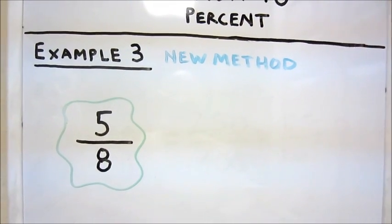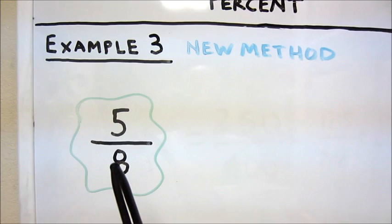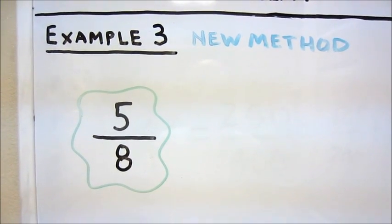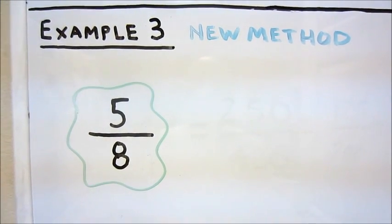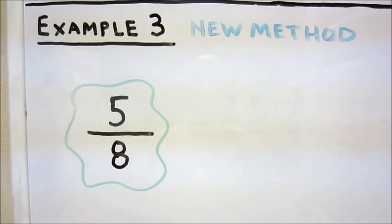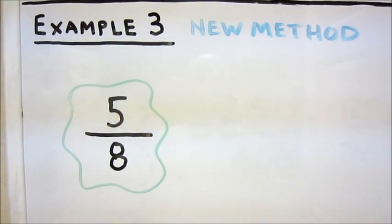In our third example of fraction to percent we have 5 eighths. Now we notice that our denominator of 8 is not a factor of 100. So what we're going to do is multiply out and see what we get.